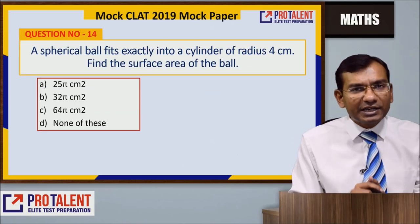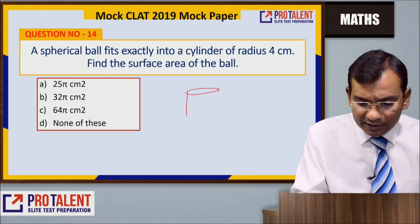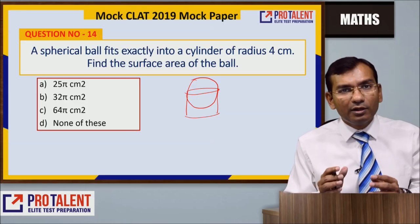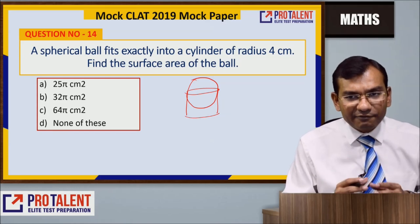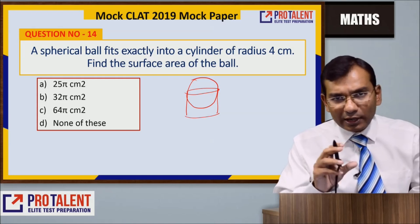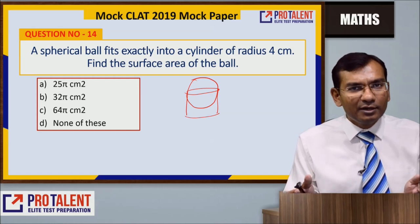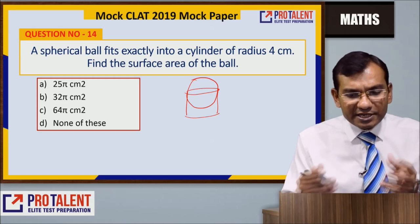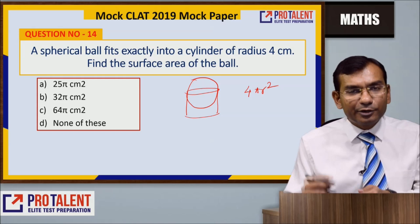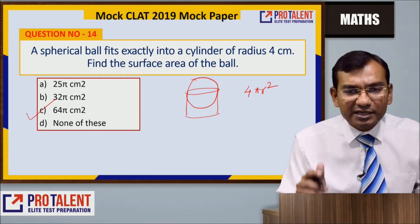Question number 14: A spherical ball fits exactly into a cylinder of radius 4 cm. Find the surface area of the ball. Since the ball fits perfectly into the cylinder, the ball's radius is also 4 cm. Surface area of a sphere = 4πr². So it's 4π × 4² = 4π × 16 = 64π cm².